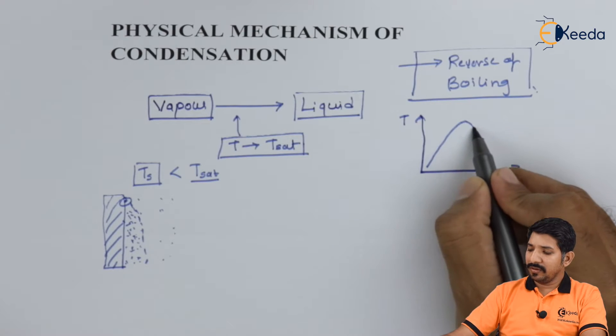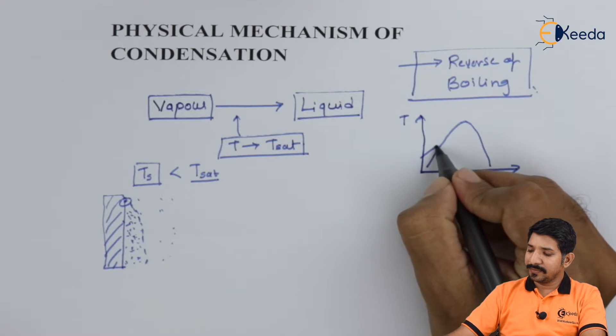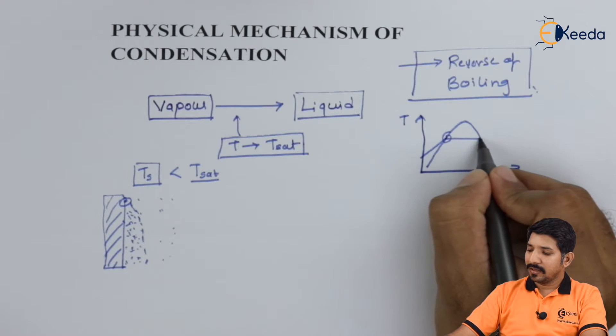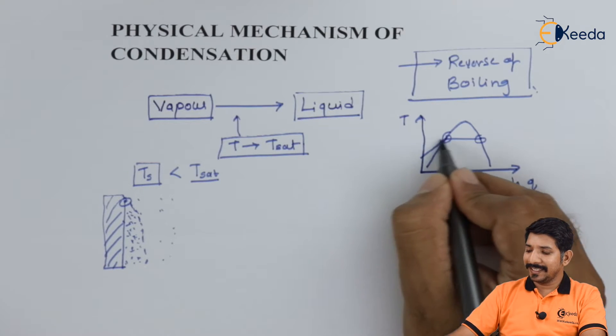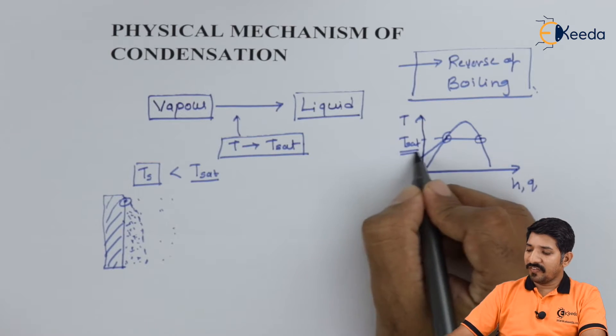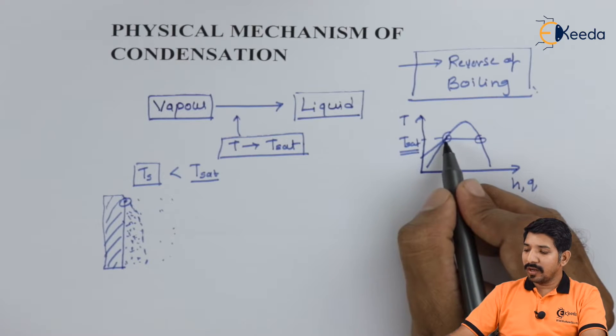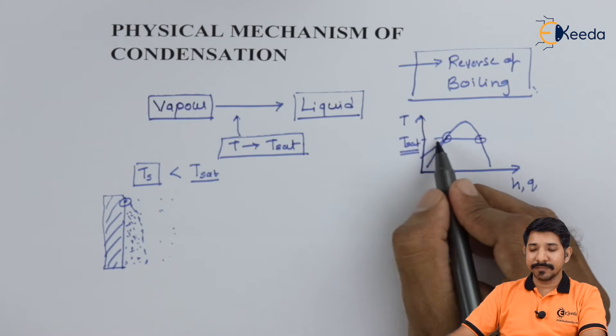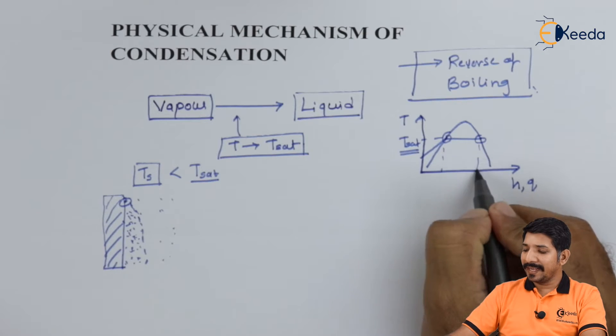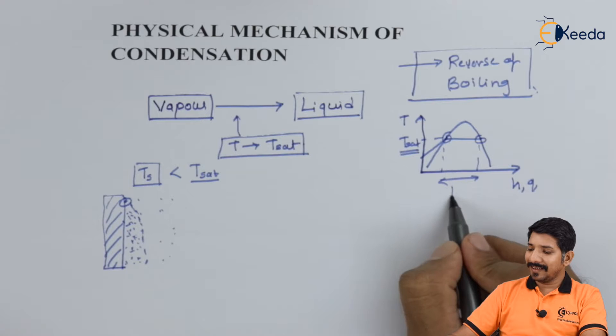If I keep increasing the value of h or q, the temperature will keep increasing until it reaches the latent heat or saturation temperature. After reaching saturation temperature, there will no longer be any increase in temperature even if I am adding heat. This heat is called latent heat.